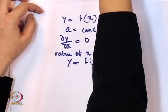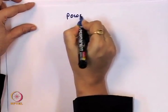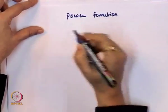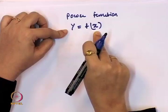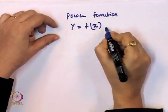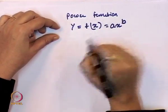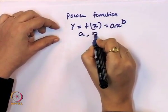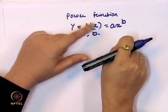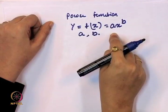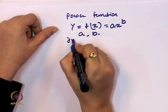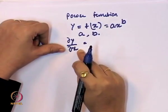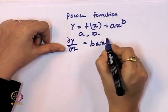Next, we discuss the derivative of a power function. Here the functional form has a power: y = f(x) = ax^b, where a and b are constants. Taking the derivative, dy/dx = b·a·x^(b-1).